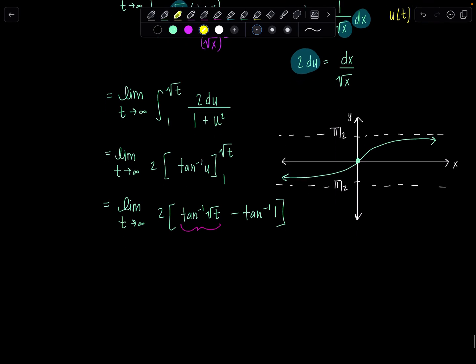So here's the deal. t is going to infinity. So square root of t is also going to infinity. What is tan inverse approaching as the argument approaches infinity? It's leveling off at pi over 2. So this entire term right here is approaching pi over 2.